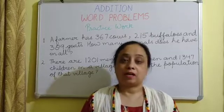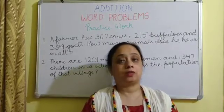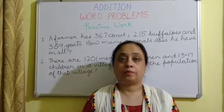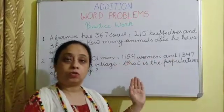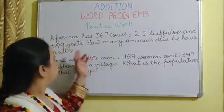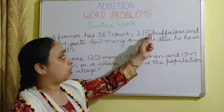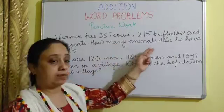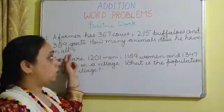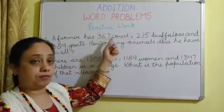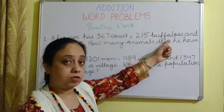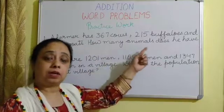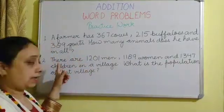Hope you have understood how to solve the word problem — formation of statements, the calculation, and writing the answer. Now I have some practice work for you — two word problems to solve. First: A farmer has 361 cows, 215 buffalos, and 389 goats. How many animals does he have in all? You have three things: number of cows, number of buffalos, number of goats. Find the total number of animals.